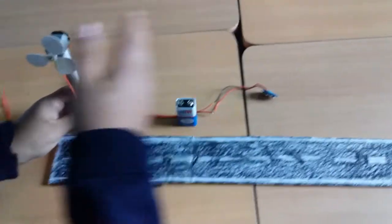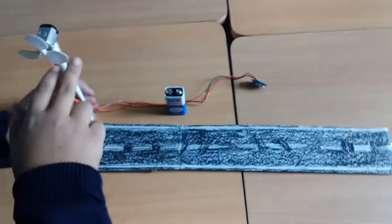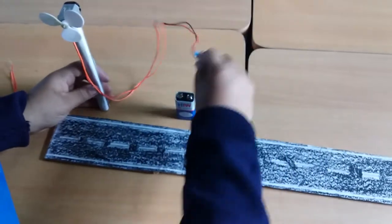When the air passes through the windmill, it rotates very fast and the battery is charged here.